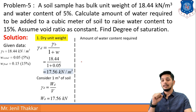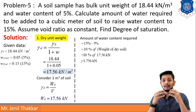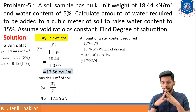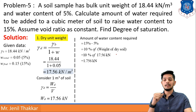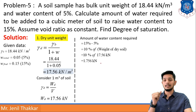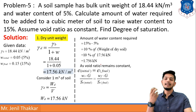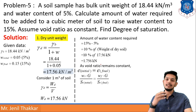From this dry weight, I will find out the amount of water required. The gap in water content to be added is 10% (15% minus 5%), which is 10% of the weight of dry soil. 10% of 17.56 kN is 1.756 kN. So I need to add 1.756 kN of water to the soil. Since void ratio is constant, E_initial = E_final, which gives W·G/SR_initial = W·G/SR_final.